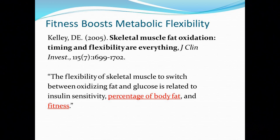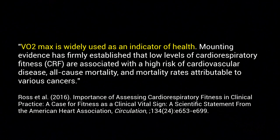The study I'm going to use is this one here, which I think is a landmark study. We're going to look at the schematic. The quote is that the flexibility of muscle to switch between oxidizing fat and glucose is related to insulin sensitivity, percentage of body fat, and fitness. So these three factors improve metabolic flexibility: being sensitive to insulin, having a lower body fat or leanness, and fitness — defined in this field as VO2 max, the amount of oxygen we can consume per minute.